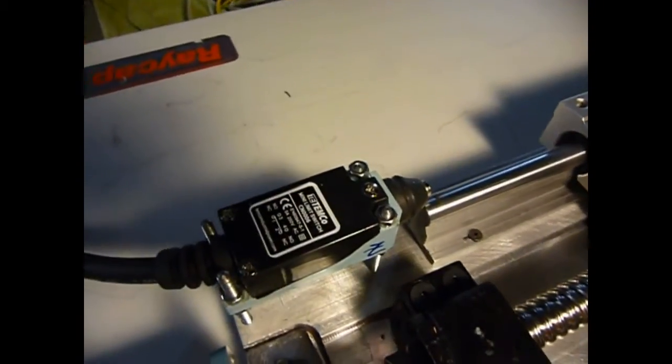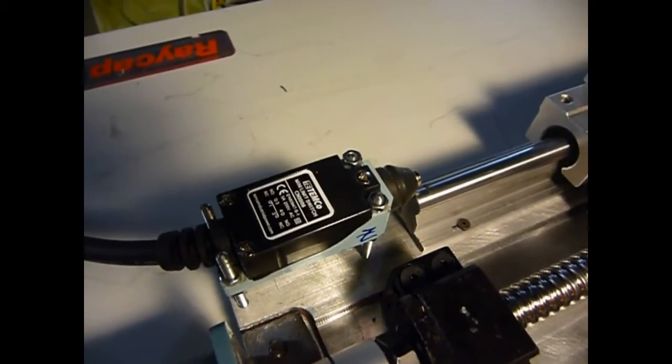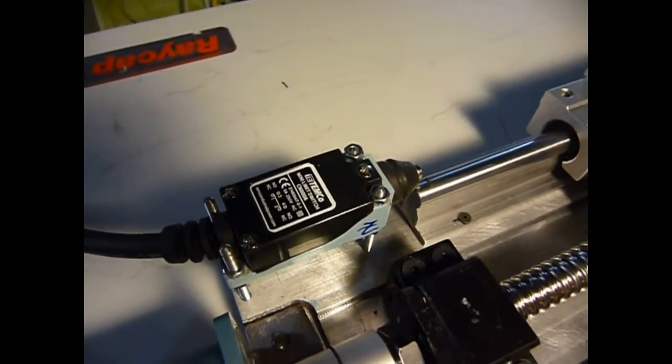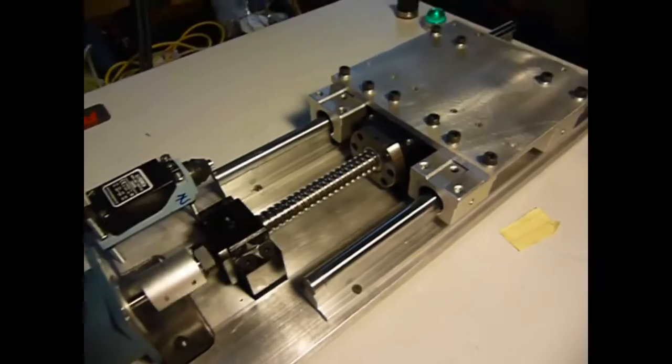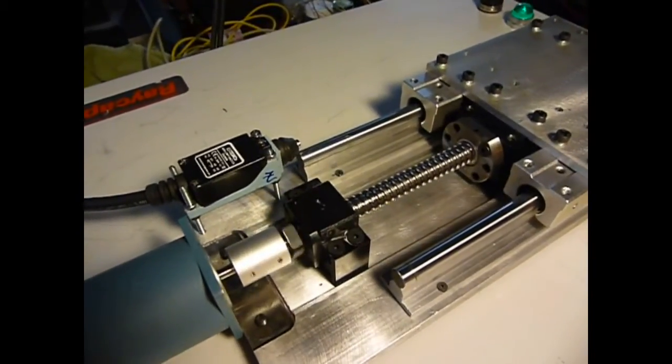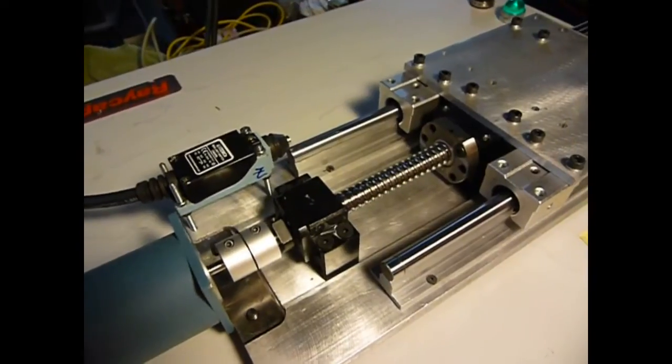Here's the home switch. It's a Temco that I got on eBay. It was about six bucks. It's very good. I'm jogging the axis and I'm going to home it here.